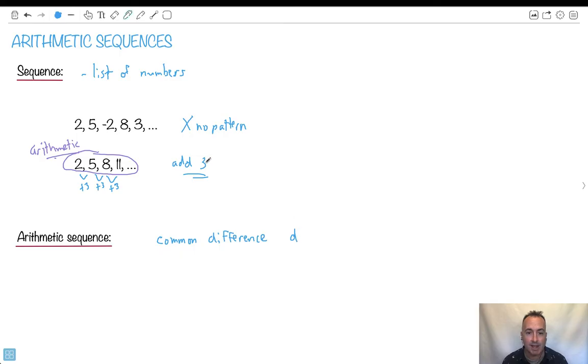So you're always going to add the same number. Keep in mind, d can be negative. You can add a negative number if you want. So we're going to define it this way. Arithmetic means it has a common difference.